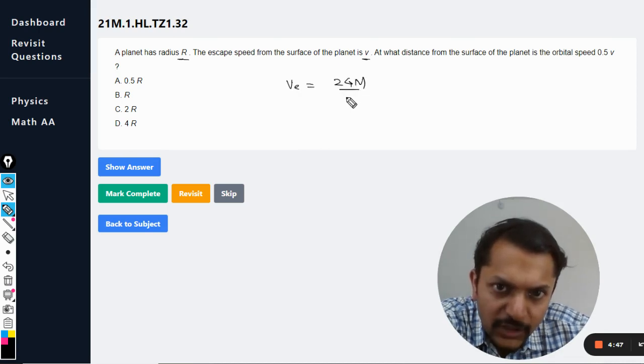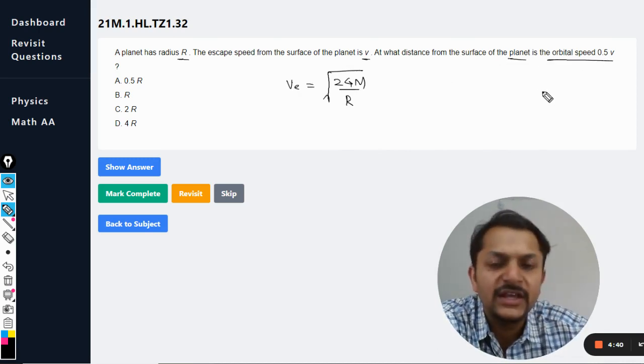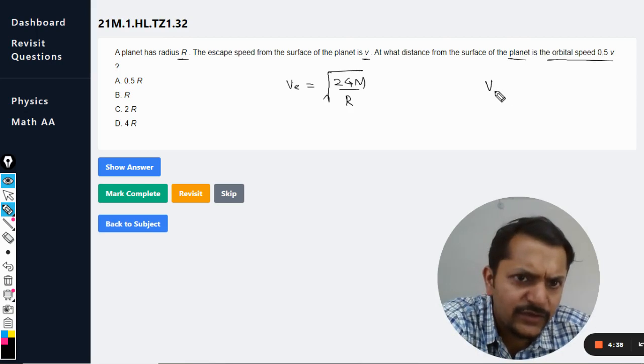I'm just writing the formula. At what distance from the surface of the planet is the orbital speed? So they are not talking about the speed of the satellite.